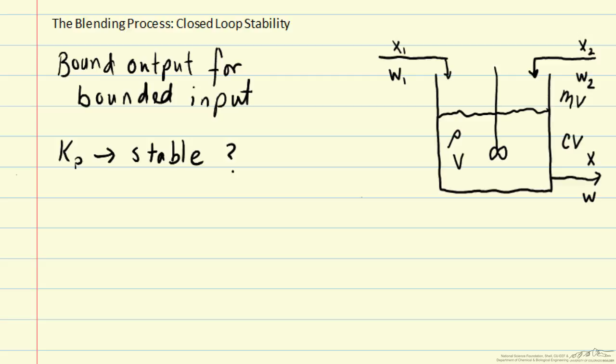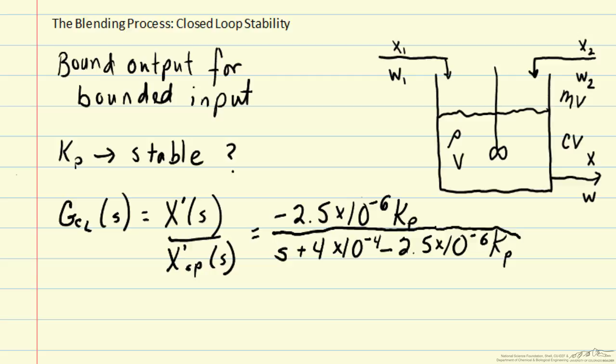Previously we had calculated g closed loop. Ideally we would want these to match. We would like x to match its set point value, but that's not going to be possible in practice. In particular, to calculate the stability of our closed loop system, we can write out the characteristic equation. In the characteristic equation, we set the denominator of our transfer function equal to zero.